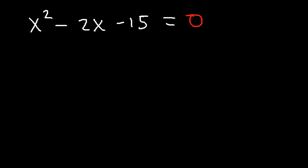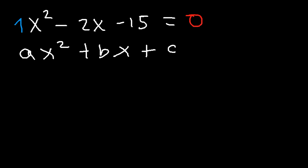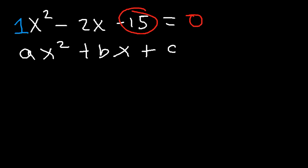First, you need to realize that standard form is this equation: ax squared plus bx plus c. So you need to know that in this equation, a is the number in front of x squared, which is 1; b is the number in front of x, that's negative 2; and c is the number that doesn't have an x attached to it. So c is negative 15.